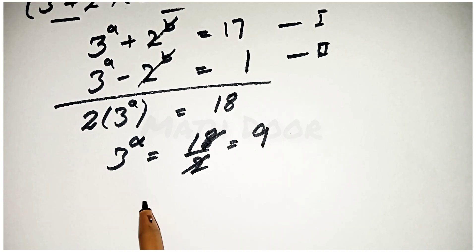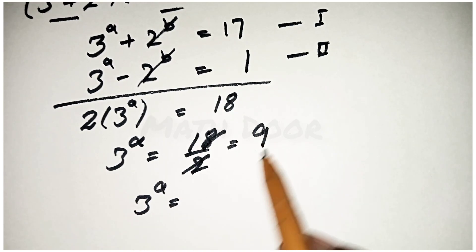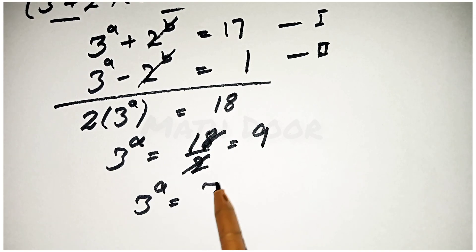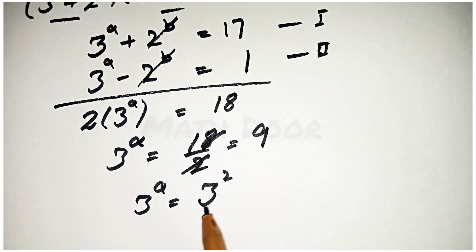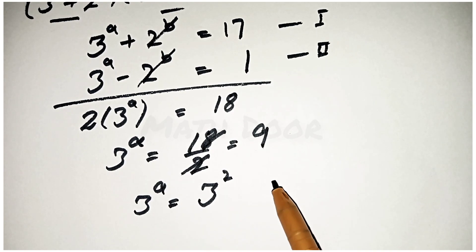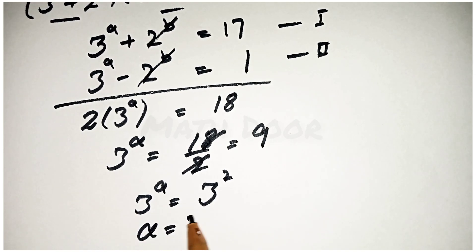So we write 3 power a equals 9, and this 9 is also equal to 3 power 2. The base is the same, so the power is also the same. Therefore, the value of a is equal to 2.